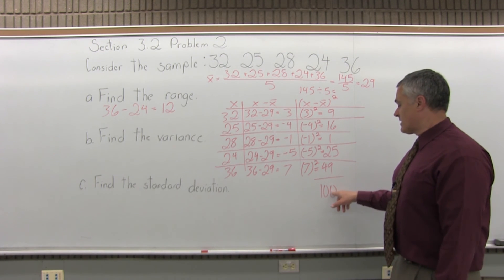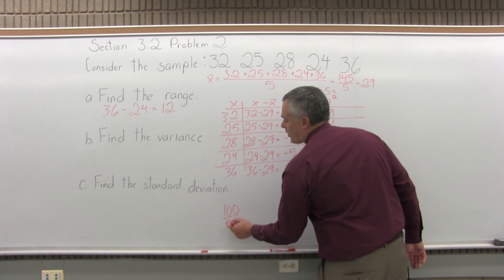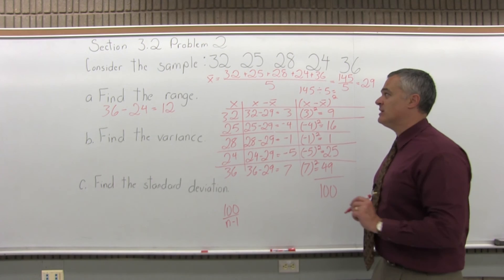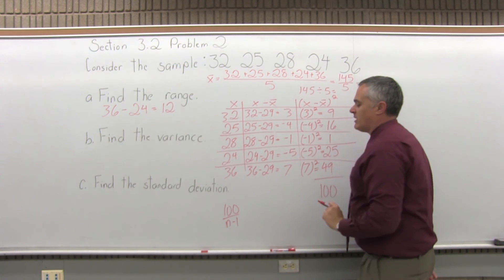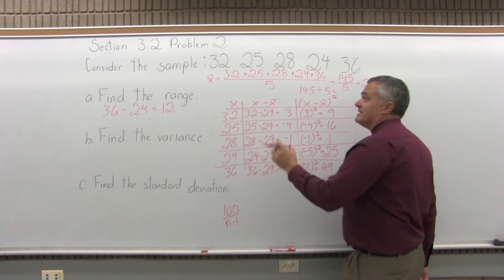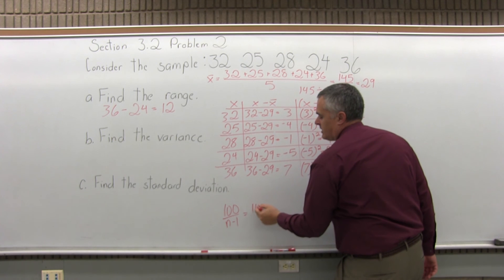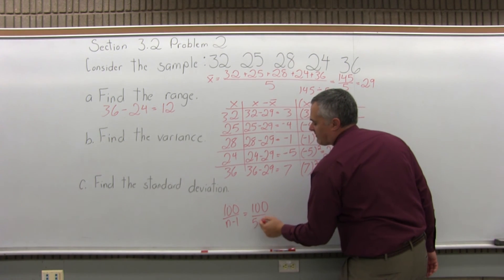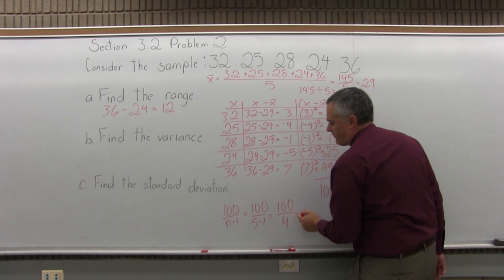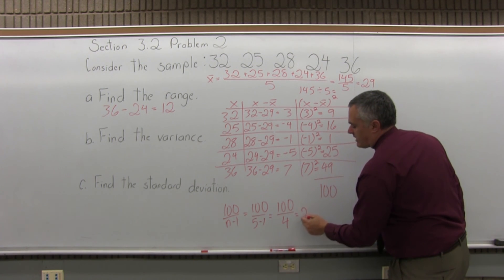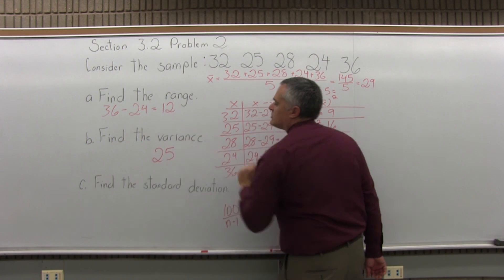Step 4, take the result from step 3 and divide it by n minus 1 for a sample and divide by n for a population. Since this problem is a sample, I will divide my result from step 3 by n minus 1. n is how many data values we have. We have 5 data values in this problem. So, n minus 1 becomes 5 minus 1. So, I have my total from step 3, which is 100. I'm going to divide that by 4. 100 divided by 4 is 25. So, that's the variance. The variance is 25.